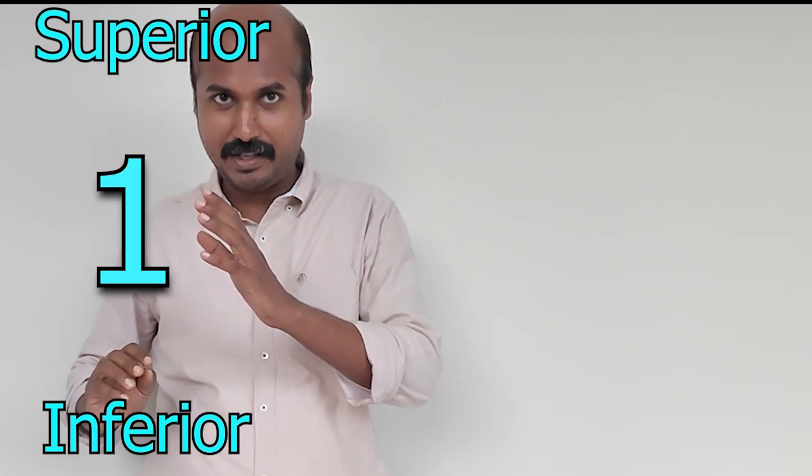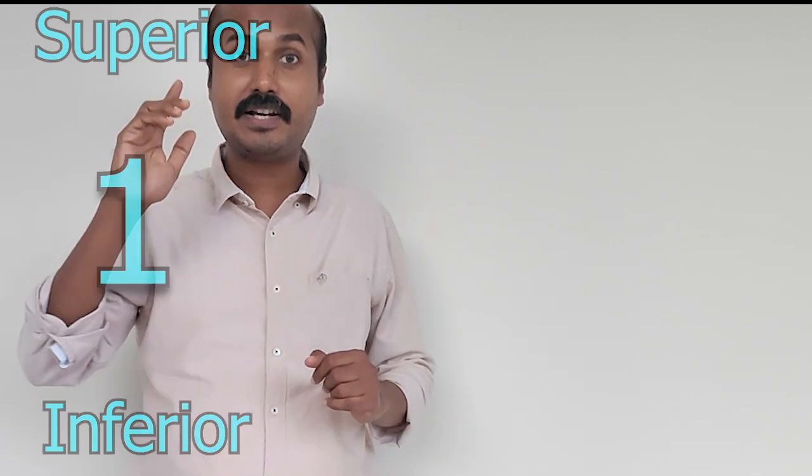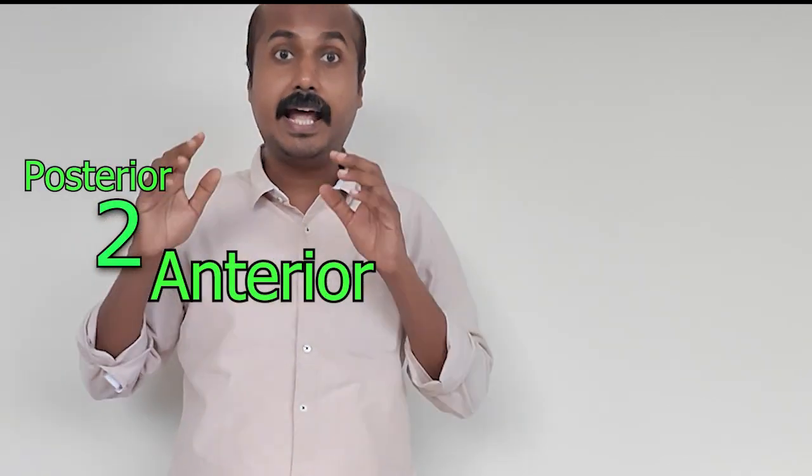One is a feature that identifies superior from inferior, next is a feature that identifies anterior from posterior, and next is a feature that identifies medial from lateral.